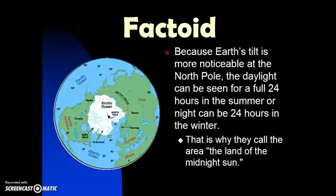Because the Earth's tilt is more noticeable at the North Pole that you see here in this picture, the daylight there can be seen for a full 24 hours in the summer and at night 24 hours in the winter. That is why we call this land of the midnight Sun.